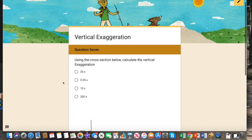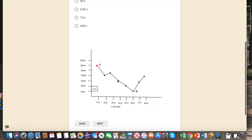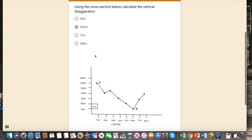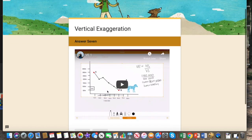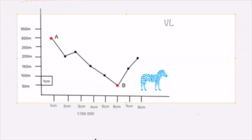Students have been given questions based on a skill recap that they just watched, like this question here. Once they have a look at the cross section and choose an answer, if they're correct, they'll be taken to the next answer. If they get the question wrong, they'll be taken to a video where I explain how to do the skill. And we learned from our last one that vertical exaggeration is horizontal scale over vertical scale.